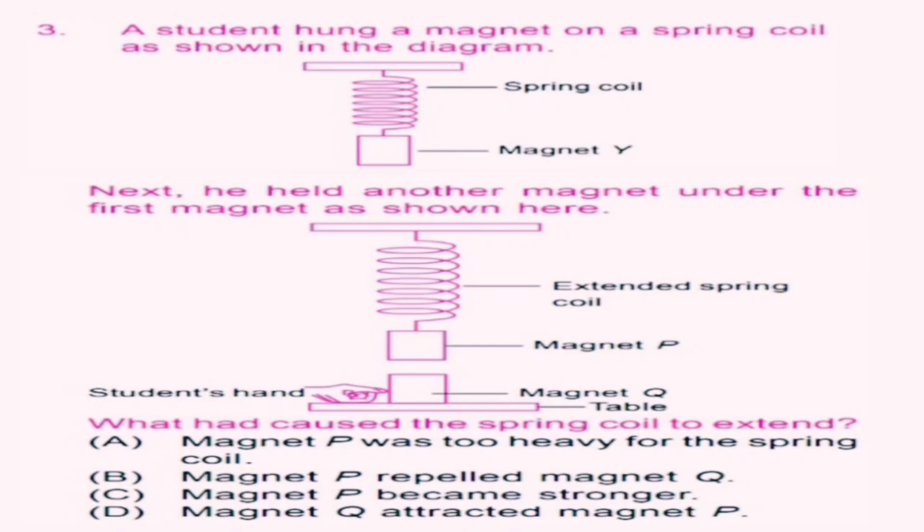Option D, magnet Q attracted magnet P. Here, magnet P is hung on the spring coil and magnet Q is kept on the table under magnet P, so these two magnets attract each other. So here, D is the correct answer.